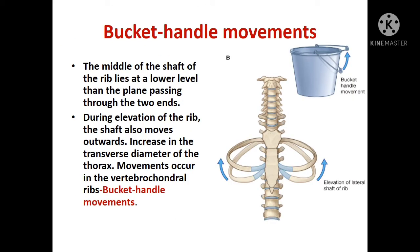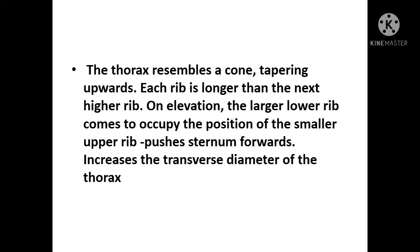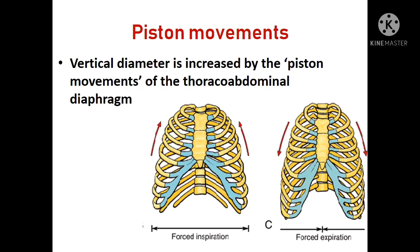During the bucket handle movement, the middle of the shaft of the ribs lies at a lower level than the plane passing through the two ends. During elevation of the ribs, the shaft moves outwards, increasing the transverse diameter — this occurs more at the vertebrochondral joints and is called the bucket handle movement. The thorax is more tapering upwards; each rib is longer than the next higher rib, and elevation of the lower rib pushes the sternum upwards and forwards, increasing the transverse diameter of the thorax.